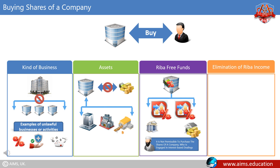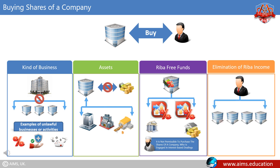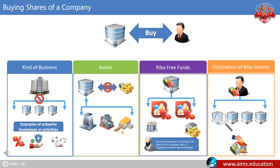Fourth condition: elimination of riba income. If, due to an unavoidable reason, a person receives a dividend from such a company, it is necessary for him to investigate and find the portion of the company's income that is based on riba. That amount must be deducted and given to charity.